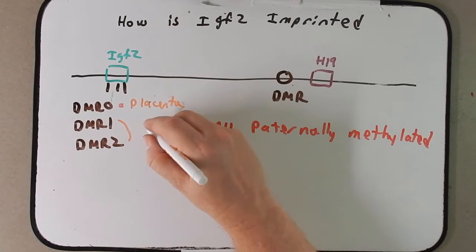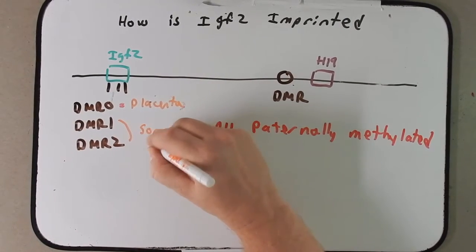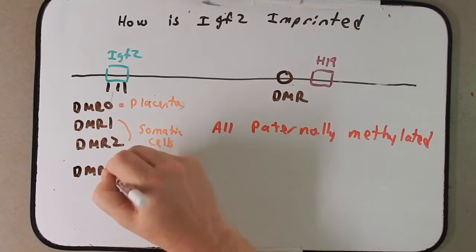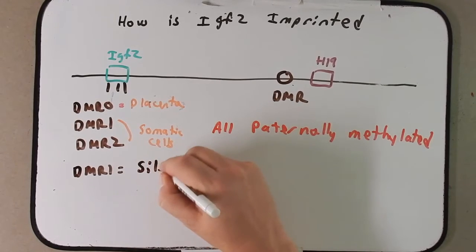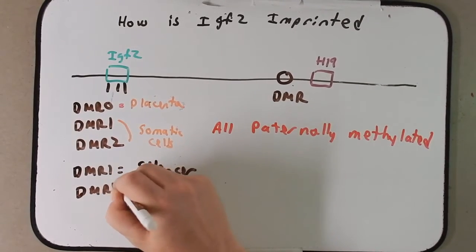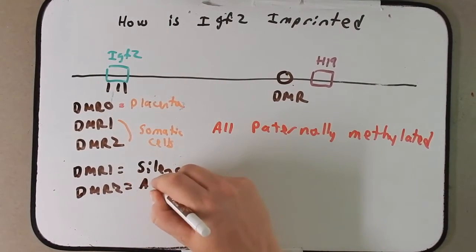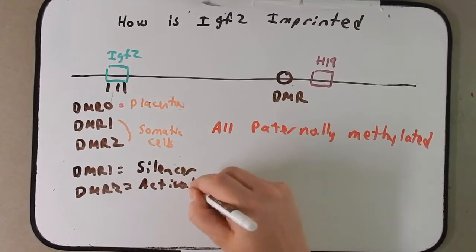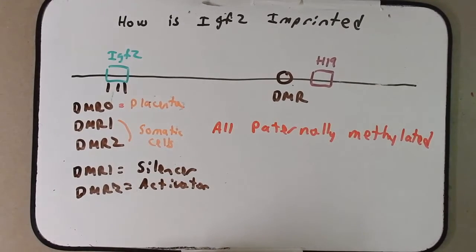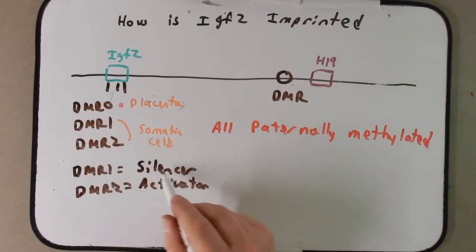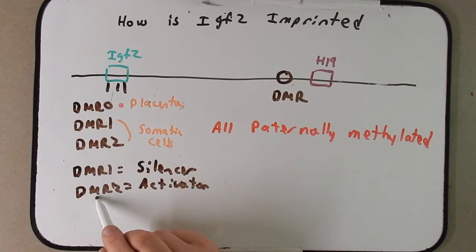DMR0 here, I'm not going to talk much about it except to say that it is expressed in the placenta. I'm going to focus on these two here, DMR1 and DMR2. These are both expressed in somatic cells. DMR1 has a silencer function. DMR2, when methylated, has an activator function, which is a little different when we think about methylation. DMR1, silencer function when methylated. DMR2, activator function when methylated.